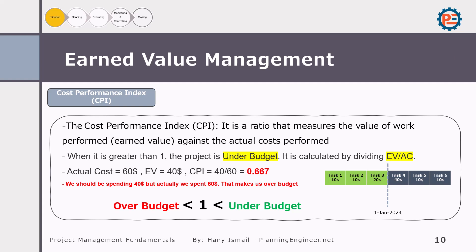Now we'll talk about another term in Earned Value Management: Cost Performance Index, or CPI. The Cost Performance Index measures the value of the work performed against the actual cost. It is calculated by dividing the earned value by the actual cost. For example, if the actual cost is 60 and the earned value is 40, the CPI is 40 over 60, which equals 0.667. If the CPI is greater than one, the project is under budget, which is good. In our example, the CPI is 0.667, meaning we are over budget, so we need to keep our CPI always greater than one.